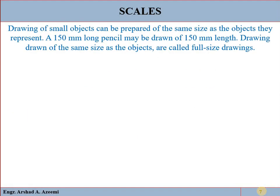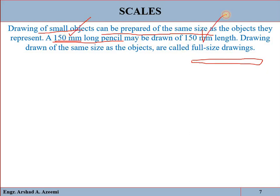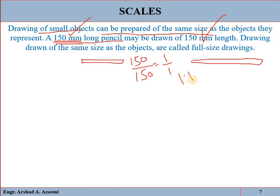The drawing of a small object can be prepared at the same size. For example, if we have a pencil of 150 mm, it can easily be drawn as 150 mm. The actual dimension equals the drawing dimension, so there is no need for enlargement or reduction. The ratio will be 1 to 1 — meaning no reduction and no enlargement. This is called the full size drawing.